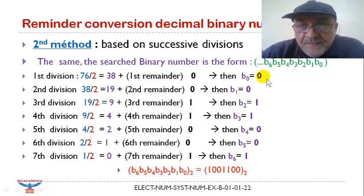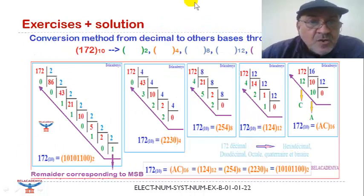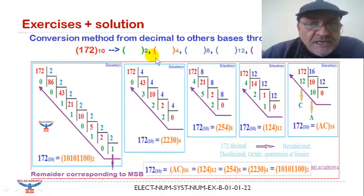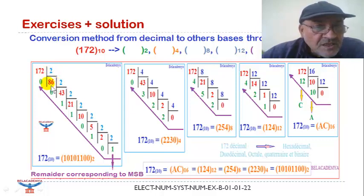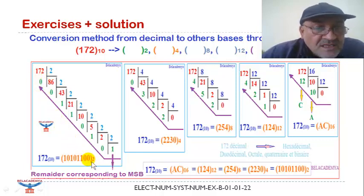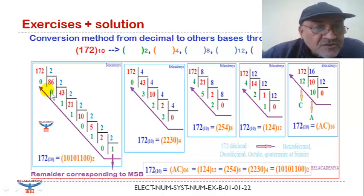The result is read from the remainders B0, B1, B2, and so on, which is identical to the result from the first method. Now we have some exercises. We need to convert 172 to binary, quaternary, octal, duodecimal, and hexadecimal. For the binary conversion, we use the division method: 172 divided by 2 gives 86 with remainder 0. This first remainder is B0, the least significant bit.